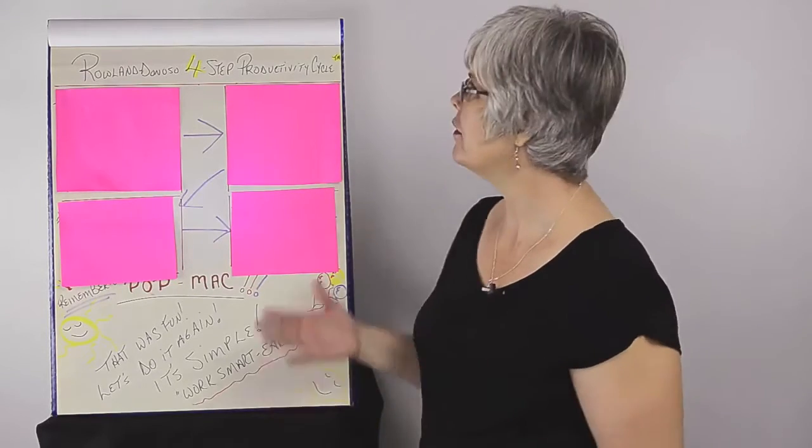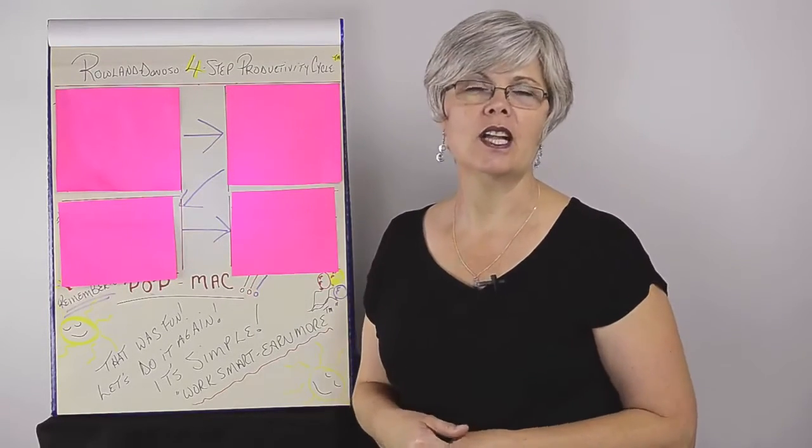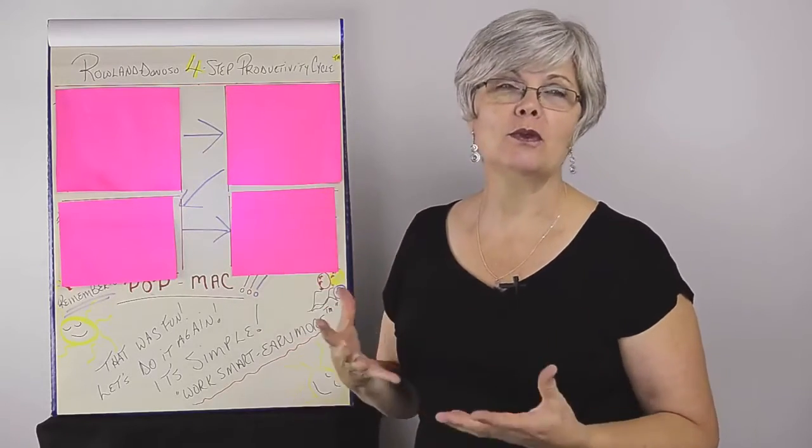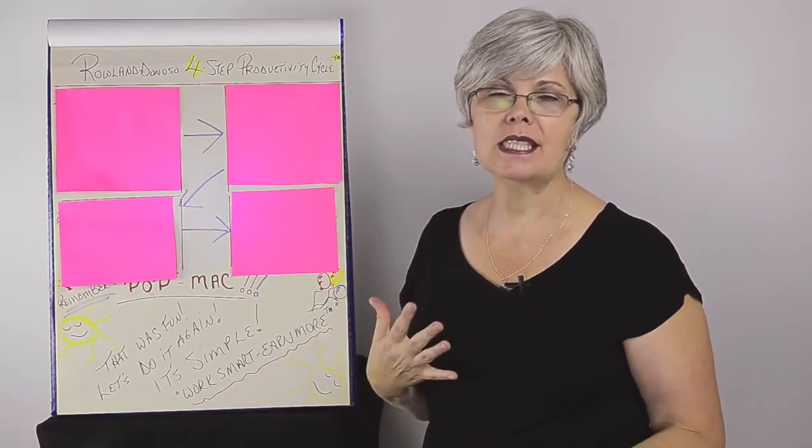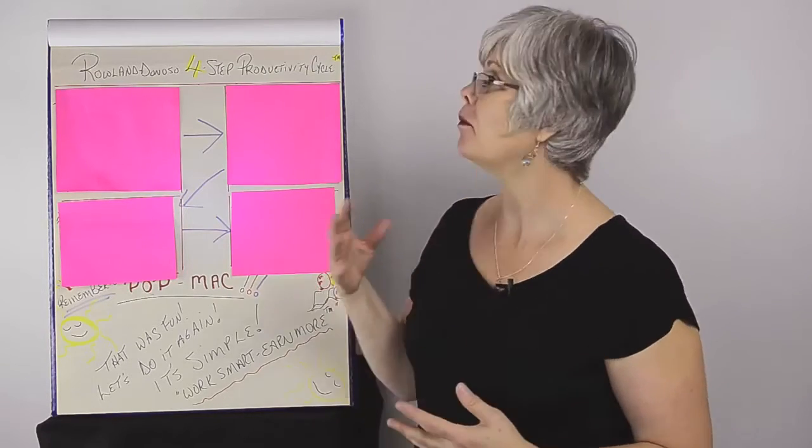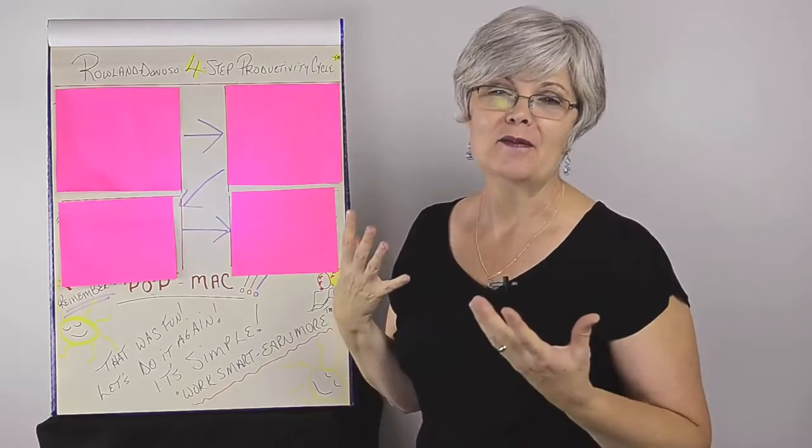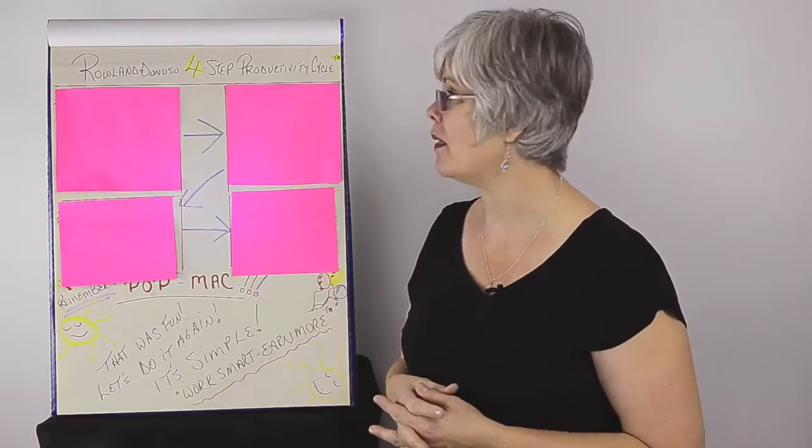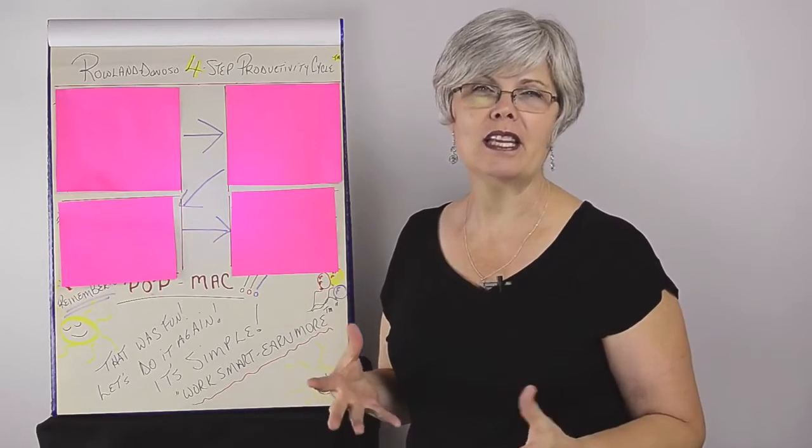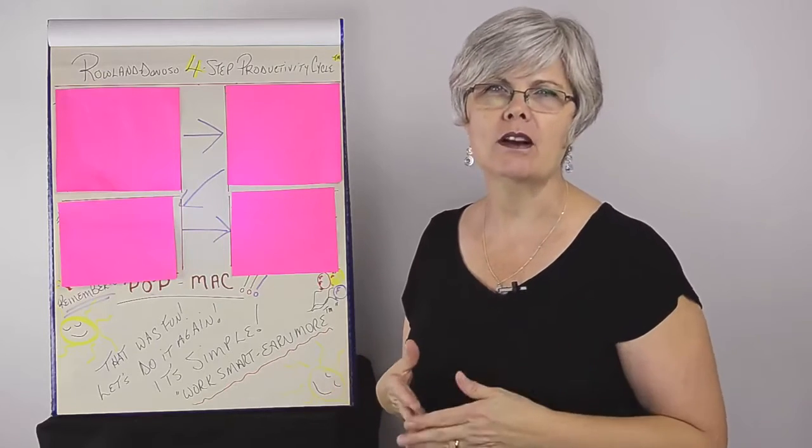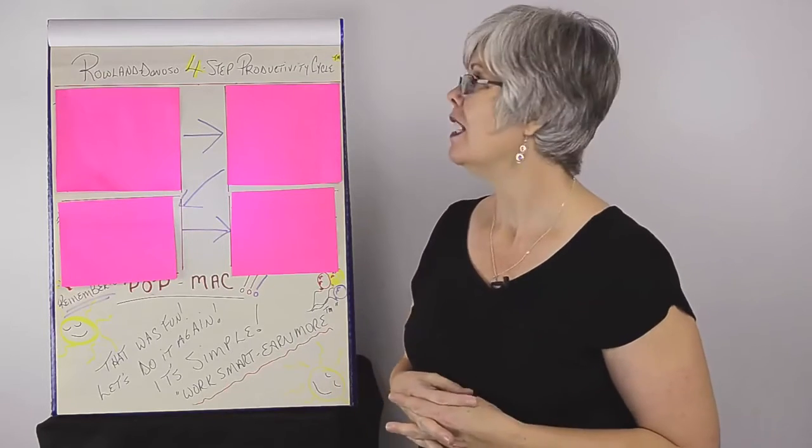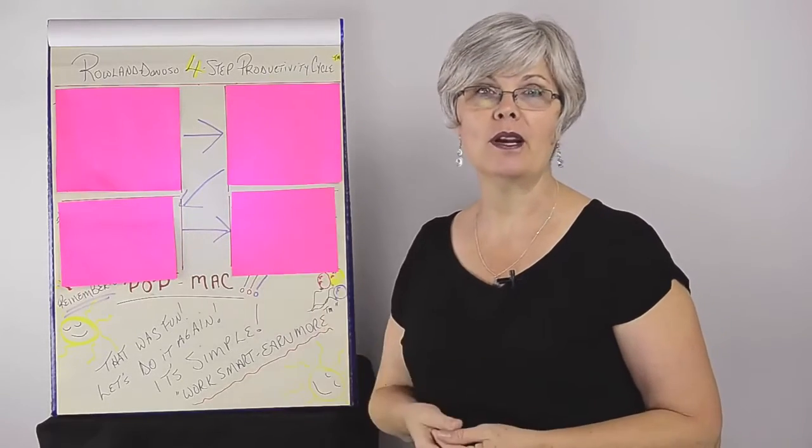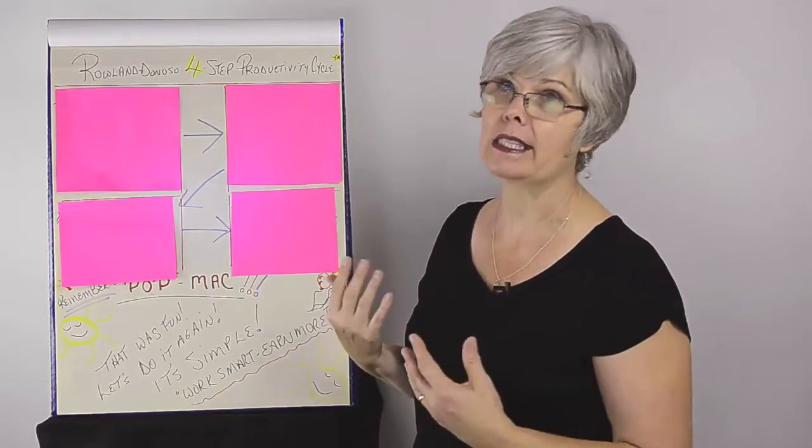So we're going to start off with the first step of the Roland Donoso four-step productivity cycle. It's called the Roland Donoso because I came up with the system but I didn't actually recognize it as a system until my client whose last name is Donoso said to me that he'd been using it over and over again because we'd set it up while working with him on his productivity. So I told him I'd give him the nod and add his name to it even though it was my system.